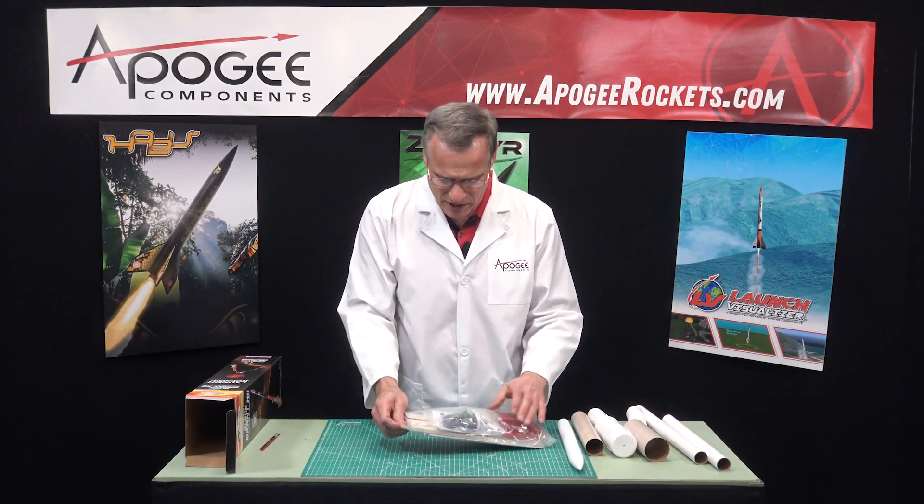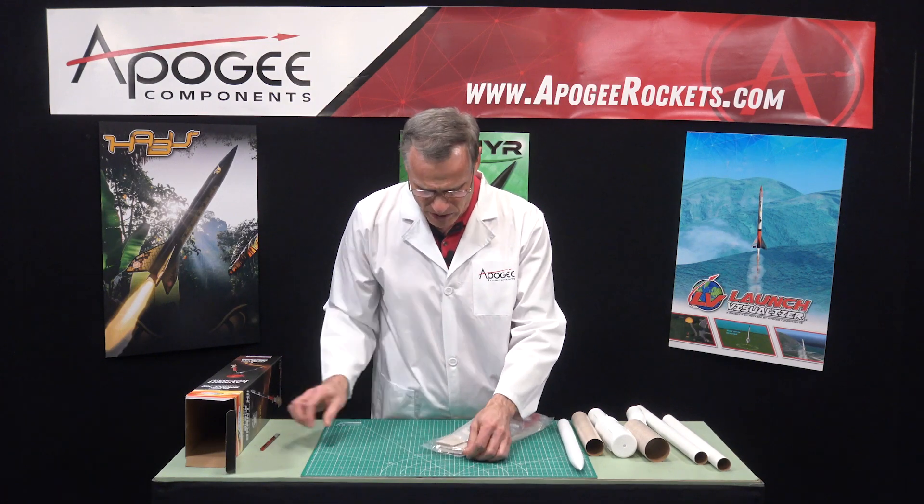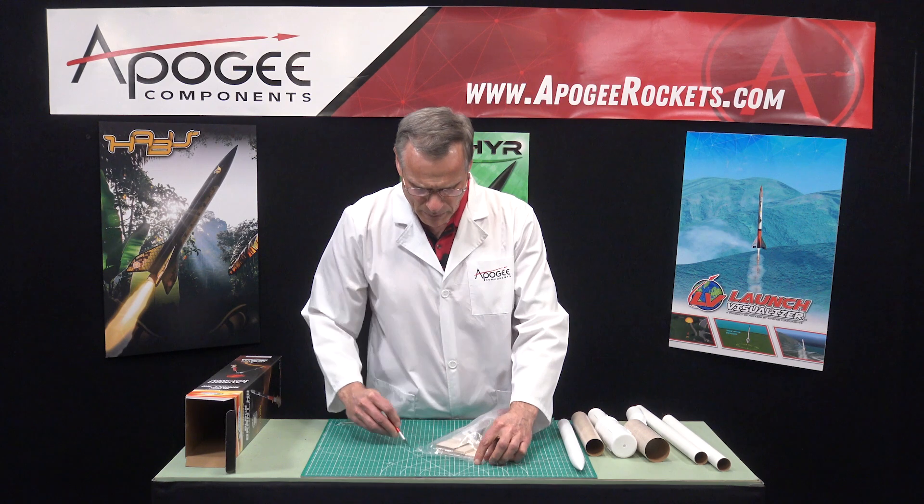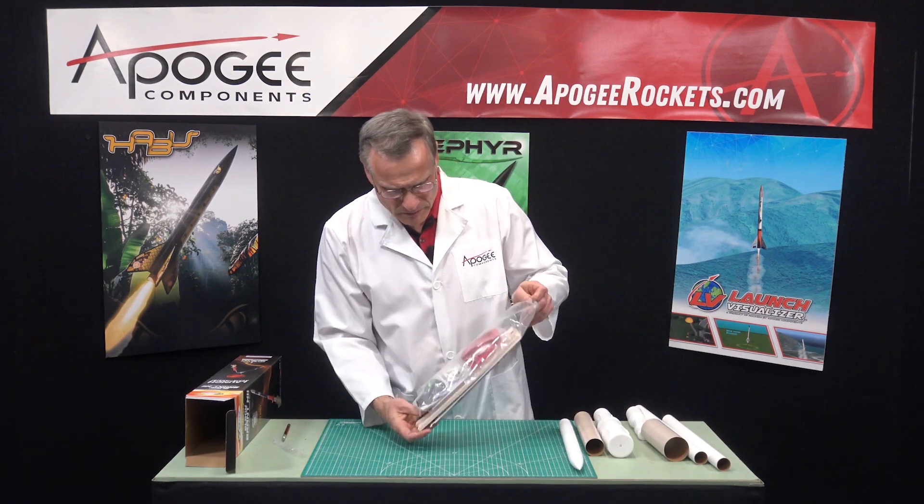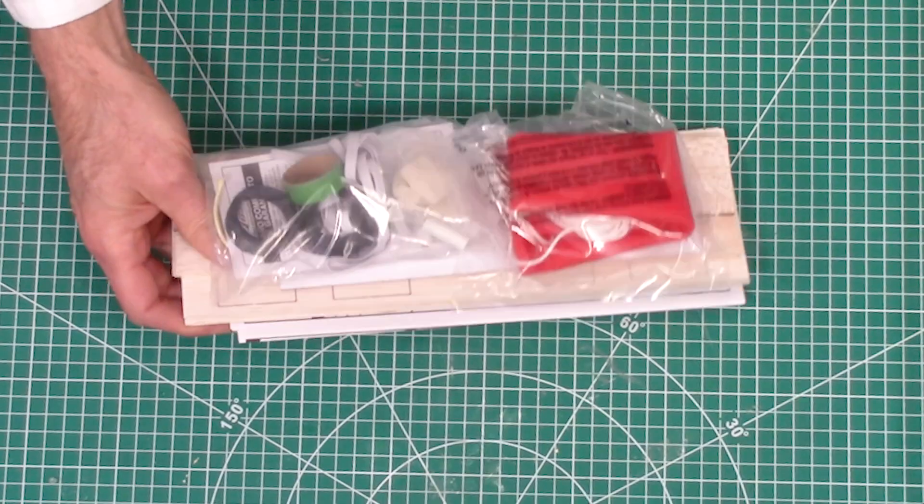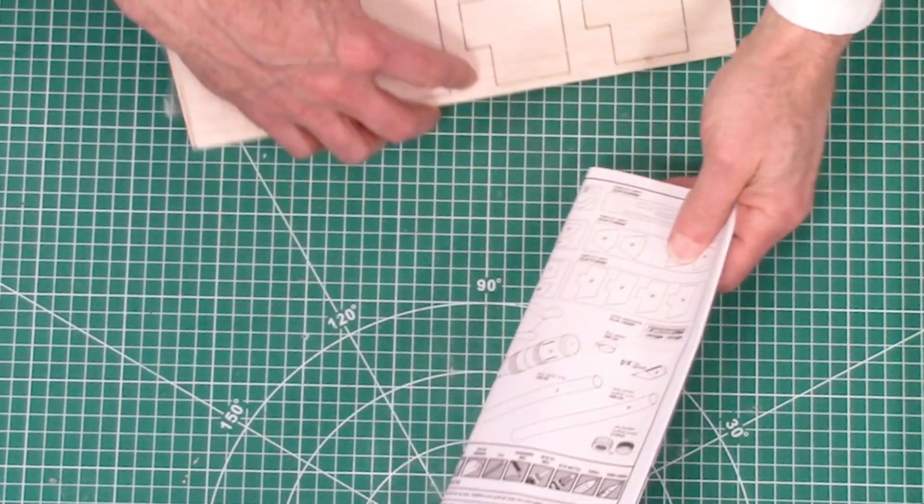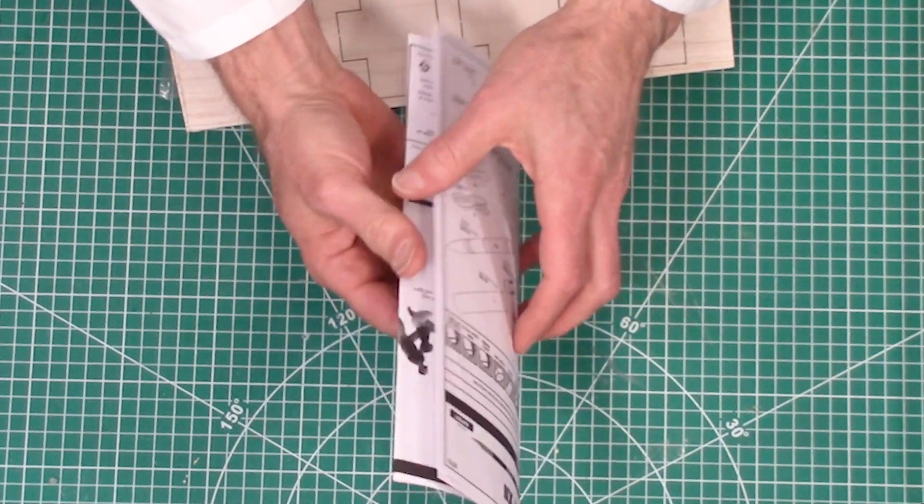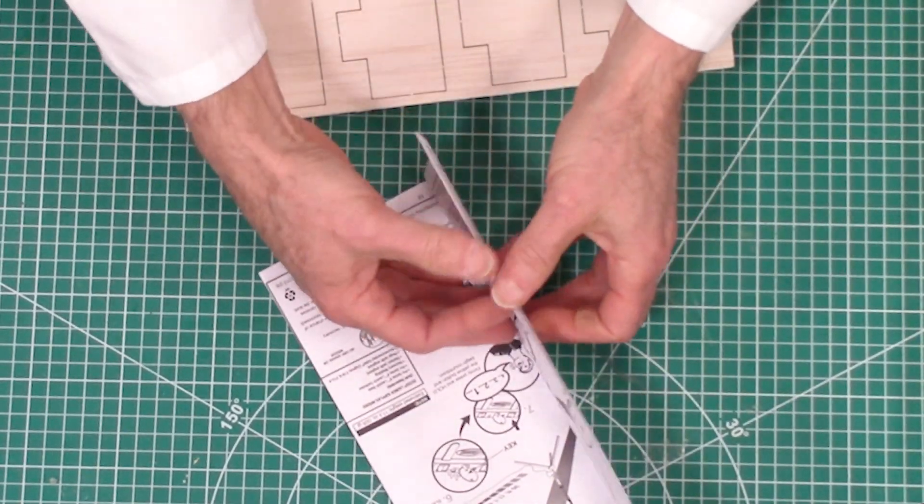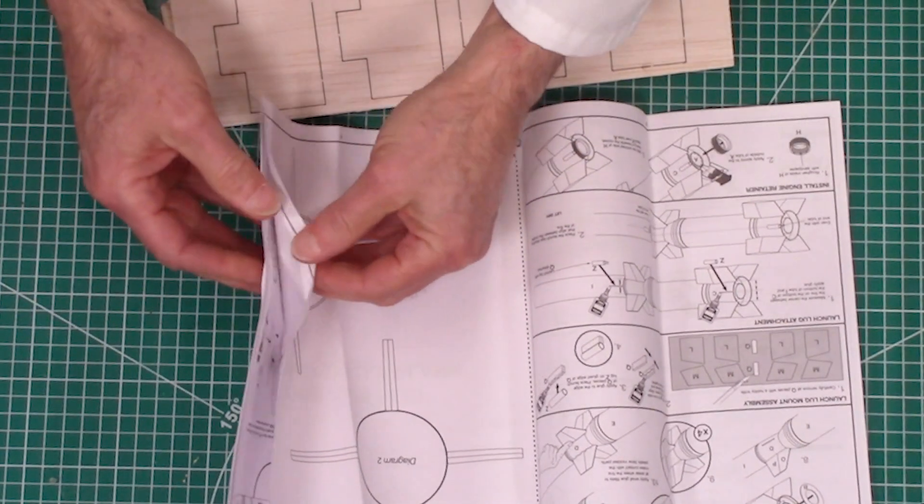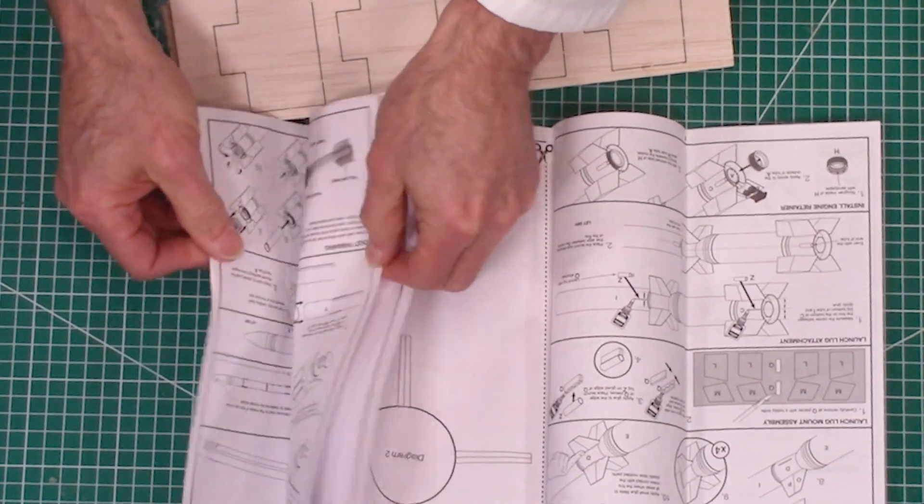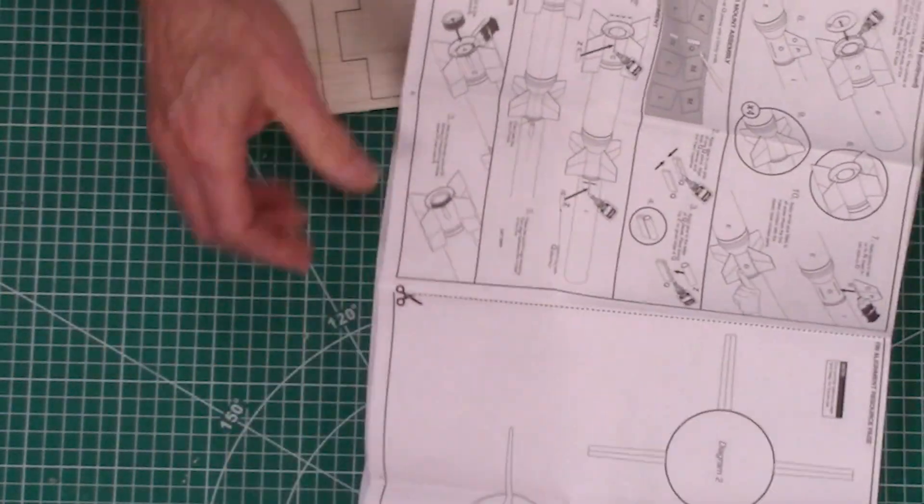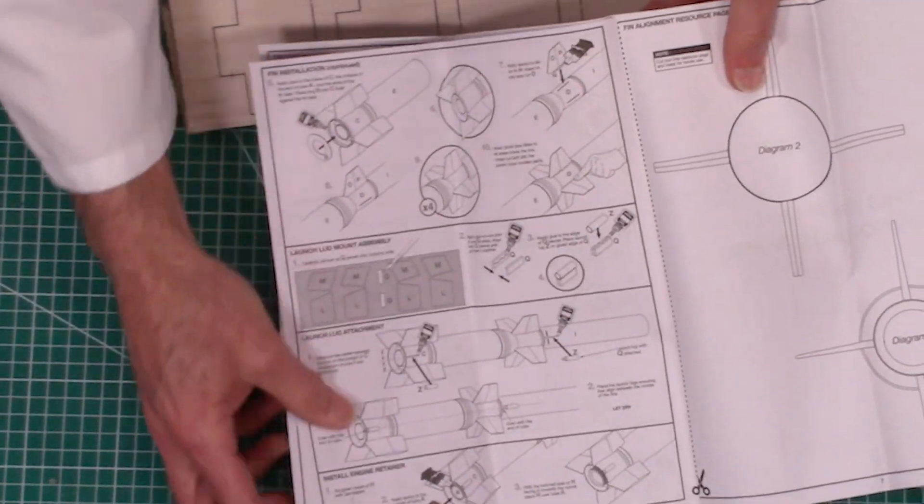So, in this bag, it looks like a lot of the other parts. Let's open it up. Okay, so the first thing is we have our instruction sheet, and it's pretty heavy. Let's see how many pages it is. Okay, it's one, two, three sheets of paper, so that's 12 pages long. The Estes instructions are really well illustrated.